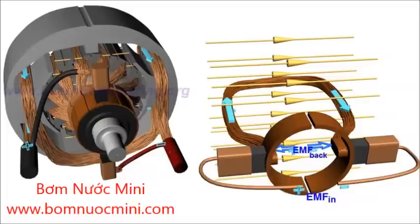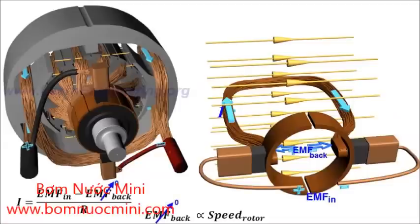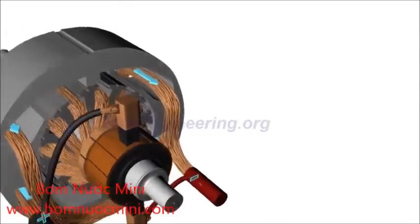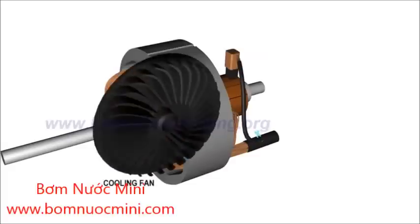The back EMF reduces armature current by a large amount. Back EMF is proportional to the speed of the rotor. At the starting of the motor, back EMF is too low, thus the armature current becomes too high, leading to the burnout of the rotor. Thus, a proper starting mechanism that controls the applied input voltage is necessary in large DC motors.